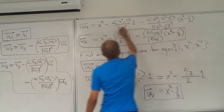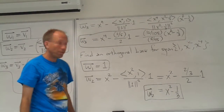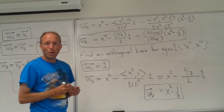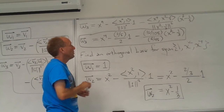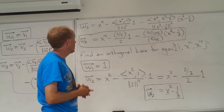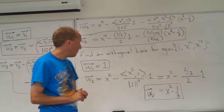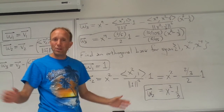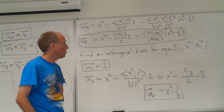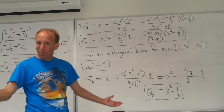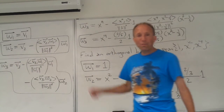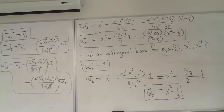So w1, w2, and w3 are your orthogonal basis for the span of 1, x², and x⁴. I hope that all makes good sense to you. If you have any problems with the Gram-Schmidt examples in the homework, by all means feel free to come ask me. It is mostly just plugging and chugging with these formulas. Thanks a lot, guys — see you soon.